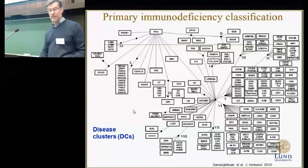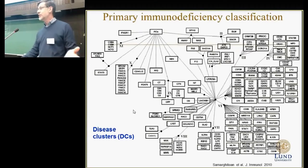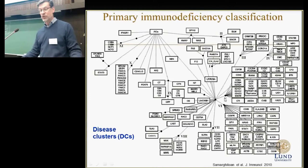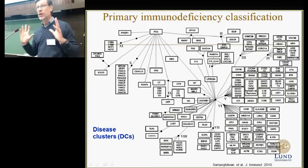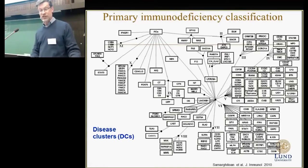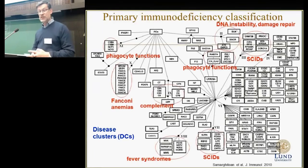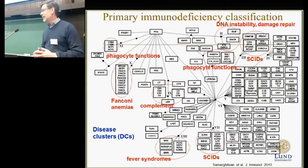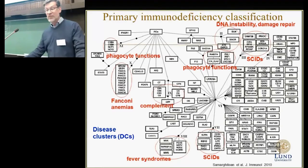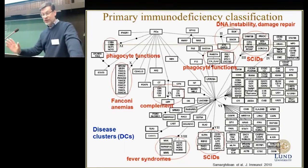And this is what we get — about 200 diseases with the route for PIDs. When we come to agreement points, four methods agree, then five methods, and in the boxes six methods agree on the grouping of diseases. Many of these disease clusters contain diseases which have similar functions, like severe combined immune deficits, fever syndromes, complement, and so on.